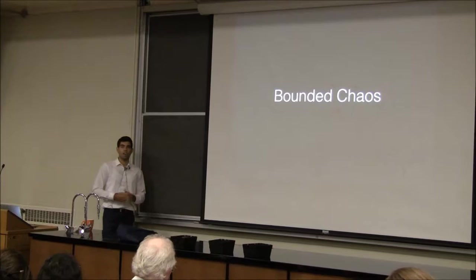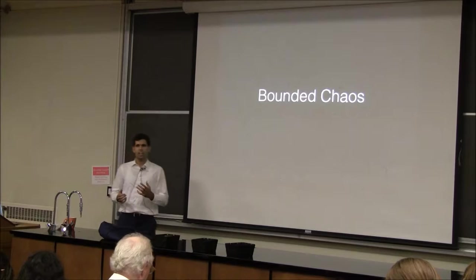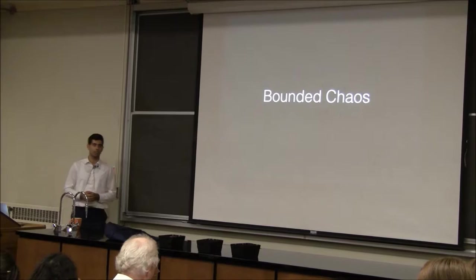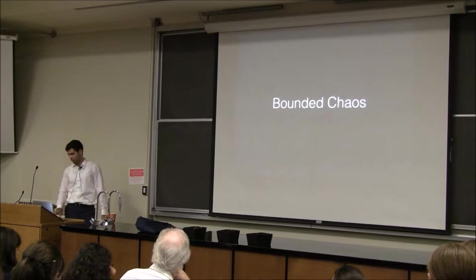Bounded chaos. If things are chaotic, how do you figure out anything about it? If it can be anything, what's the point of investigating? It turns out that most chaos has bounds to it — there are limits we can impose. We can't tell exactly what it's going to be, but we know it'll be within a certain region.